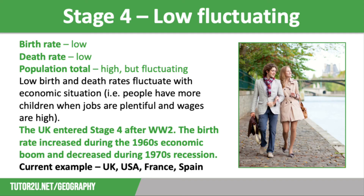Stage 4 is low fluctuating. This is where the UK is now, along with most HICs. Both the birth and death rates are low, with a high population that may be fluctuating slightly due to whatever is going on with the economy. For example, people tend to have more children when wages are high and jobs are plentiful, as they know they can support them. Access to good quality healthcare keeps the death rate low, and the birth rate is fairly low, as women in HICs tend to choose studying and their careers over having a large family, and will usually start their family at a later age.